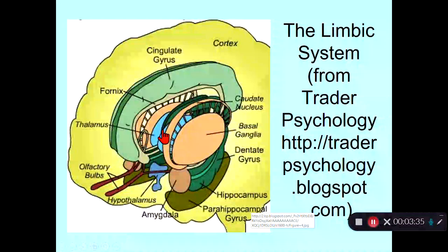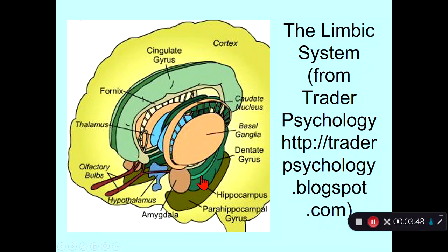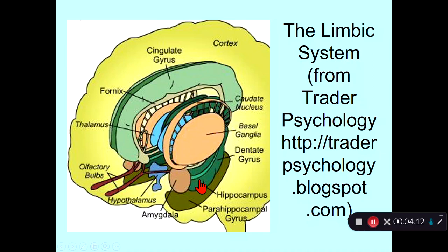This is the diagram we've shown many times before of the limbic system — this more or less circular set of many cortical and subcortical brain regions that together mediate emotional processing. Part of that is the hippocampus. The hippocampus sits right next to the amygdala, important for emotional processing, particularly fear. And this place called the parahippocampal gyrus is part of other cortical regions in the temporal lobe that work with the hippocampus in mediating declarative memory and consolidation.